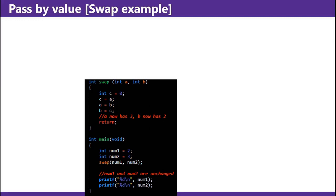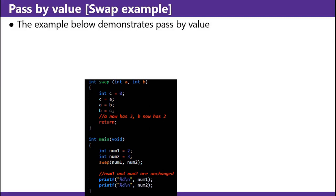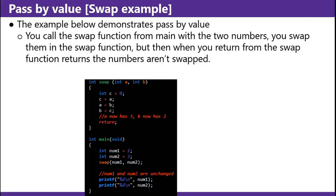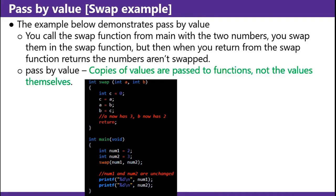Pass by value — swap example. The example below demonstrates pass by value. You call the swap function from main with the two numbers. You swap them in the swap function, but then when you return from the swap function, the numbers aren't swapped. Pass by value: copies of values are passed to the functions, not the values themselves. This is why the example doesn't work like you expected — you didn't pass num1 and num2 into the function; you passed copies of num1 and num2.